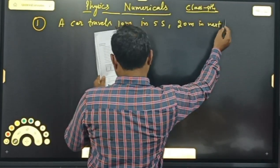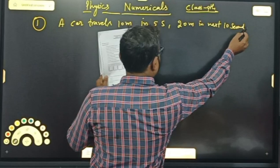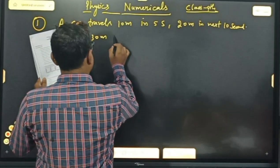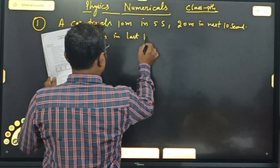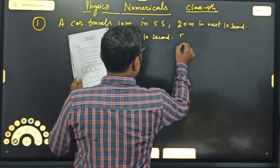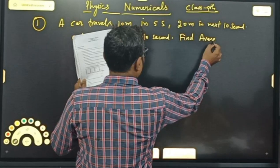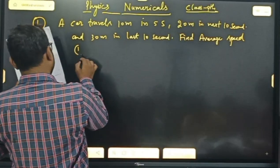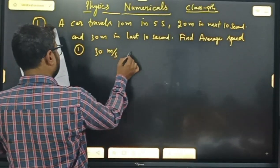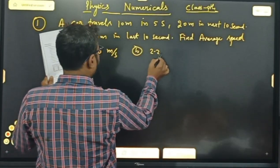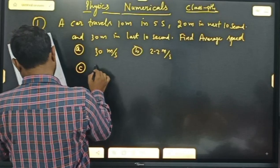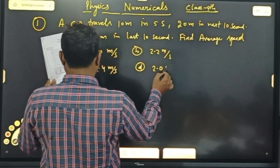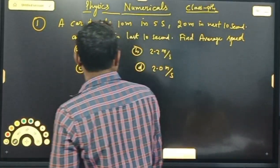In the next 10 seconds, 20 meter, and 30 meter in the last 10 seconds — find the average speed of motion. Options are: A) 3 meter per second, B) 2.2 meter per second, C) 2.4 meter per second, D) 2.0 meter per second. एक मिनट के अंदर बताओ, average speed क्या होती है?